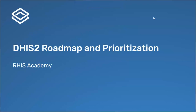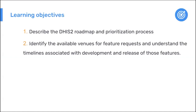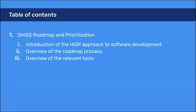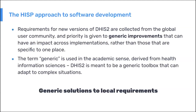The topic here is the roadmap and prioritization process — specifically how the DHIS2 software development roadmap is developed and prioritized, and how you can request feedback and provide input on it. DHIS2 is now used by a lot of countries, and we're getting a lot of requests: 'In my country we're working on this project, we need this feature, we need the user interface slightly different, we need to import data in a certain way.' So there are a lot of feature and functionality requests coming in.